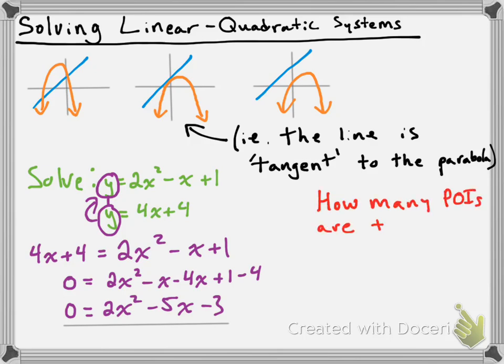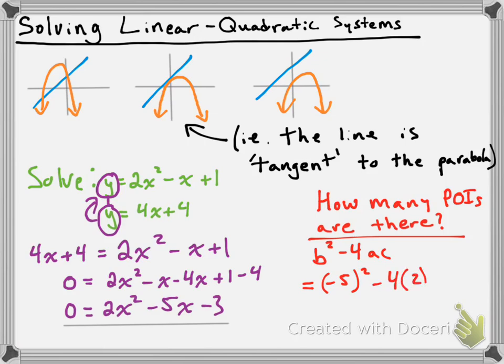How many points of intersection are there? We check b squared minus 4ac. So b is negative 5, a is 2, and c is negative 3. When we substitute them into our discriminant, we get 49. Since that's positive, that tells us we're going to get two points of intersection.